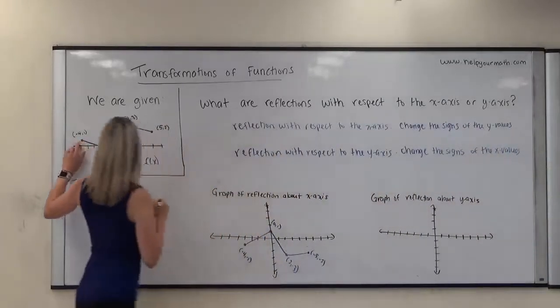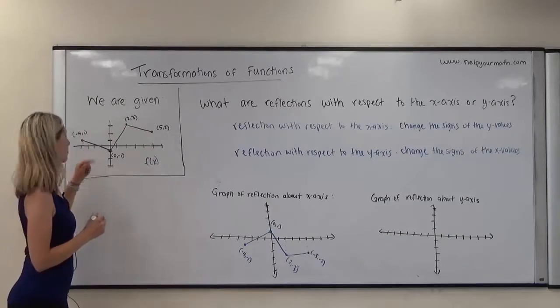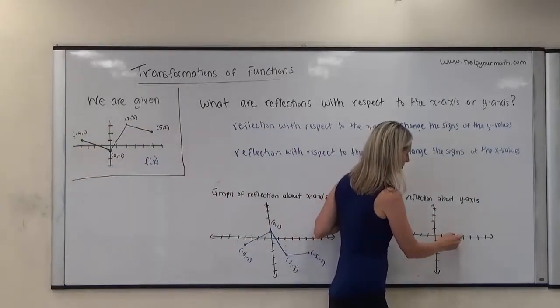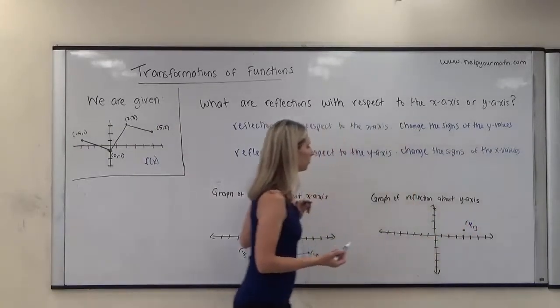So again, it would be taking negative 4, 1 and moving it over here to the positive side where it would become 4, 1. So this would become 1, 2, 3, 4, up 1, with respect to the y-axis.